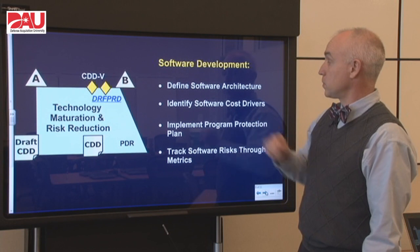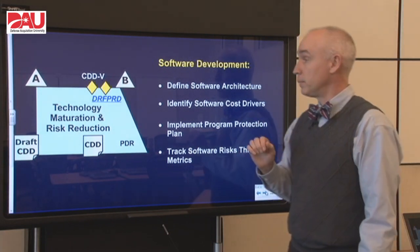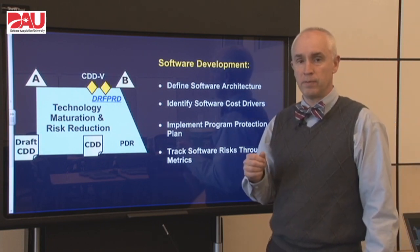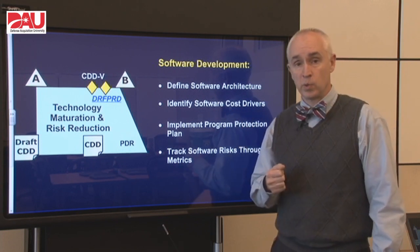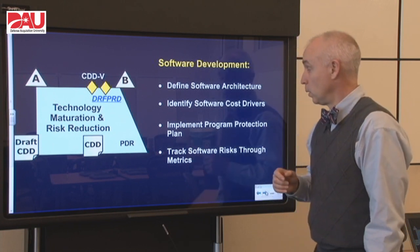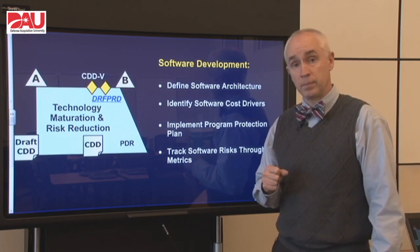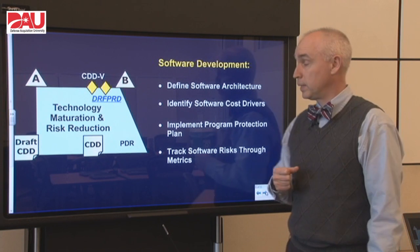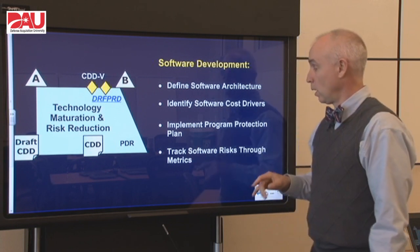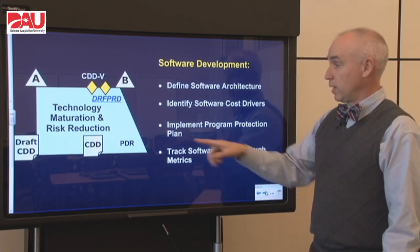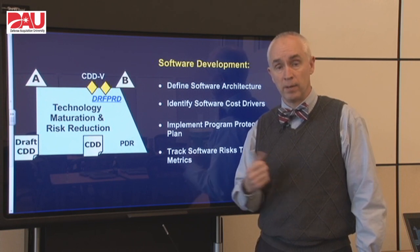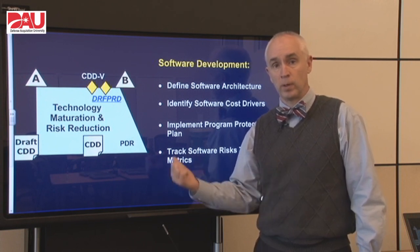Software development can really help us here by defining our software architecture early and making sure that we've identified cost drivers. Before we get to the capability development document validation, we want to understand those requirements from a software standpoint and make sure that we haven't signed up for anything that's undoable or unaffordable. We also want to implement that program protection plan and update it for Milestone B to make sure we're keeping everything on the program safe from cyber attacks or intrusion. We should establish software metrics that we can track to help us identify any software risks that are emerging at this point.